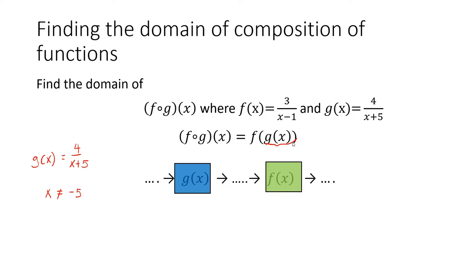So g(x) = 4/(x + 5), which means we have a fraction. And in fractions, we can never divide by 0. And what is the x value that makes the denominator equal to 0? It's -5, which means our input cannot be -5 because that'll cause problem with g(x). What about f(x)? Well, f(x) is also a fraction. 1 cannot go into f(x).